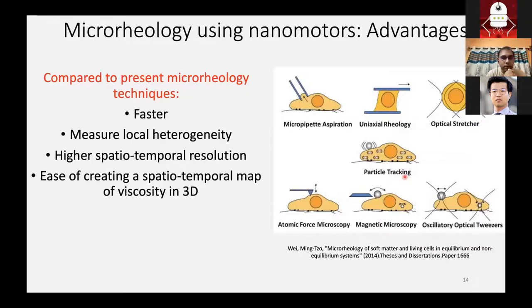With nanomotors, we have some advantages. A few of them are nanomotors are faster. They can really measure local heterogeneity that is in the scale of up to five microns. They can detect if the viscosity is changing. They have higher spatiotemporal resolution and you can use them to create a viscosity map because they can be moved around quite controllably.